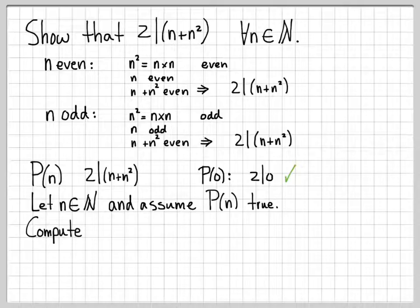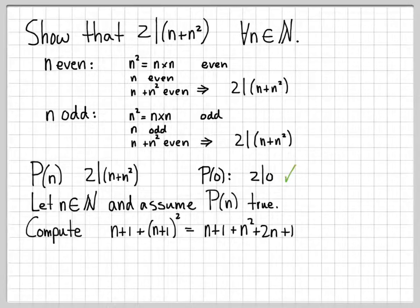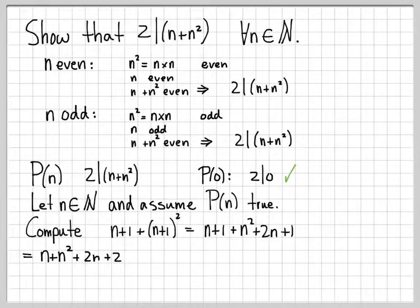I'm going to look at the top, and the n's that I have — two divides n plus n squared — I'm going to replace all those n's with n plus ones. So now I'm working with the quantity n plus one plus the quantity n plus one squared. For P of n plus one to be true, I need to show that this is divisible by two. If we do just a little algebra and multiply out n plus one times n plus one, I get n squared plus two n plus one. Combining like terms gives n plus n squared plus two n plus two. I can even factor out the two to have n plus n squared plus two times n plus one.